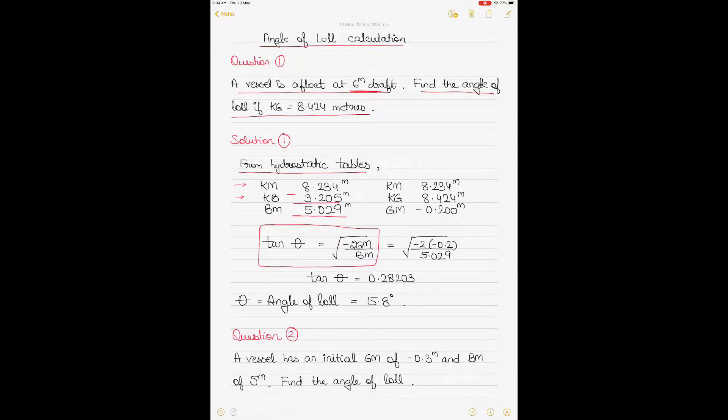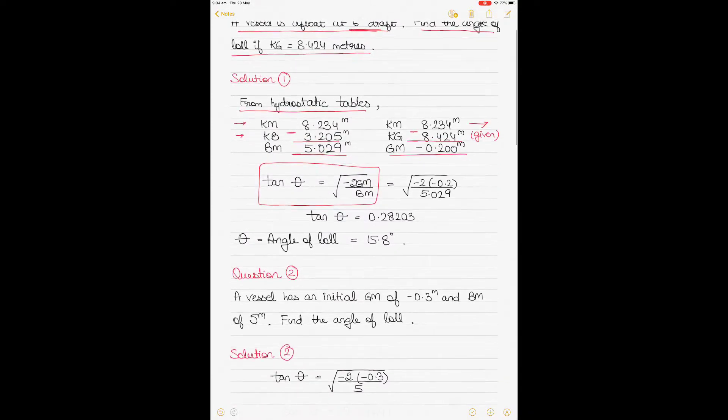Similarly, KM is 8.234 from the tables, and the KG given to you in the question is 8.424. So KM minus KG again will give you the GM. In this case, of course, GM becomes negative because the KG value is more than KM. So we are subtracting a bigger number from a smaller number, so GM becomes negative.